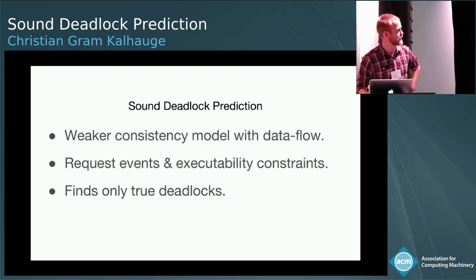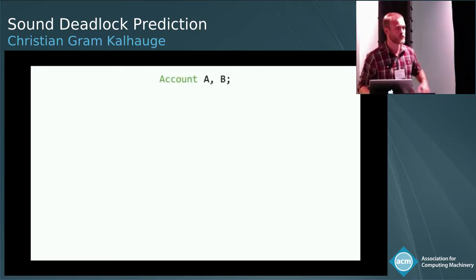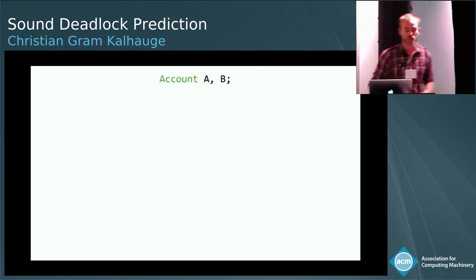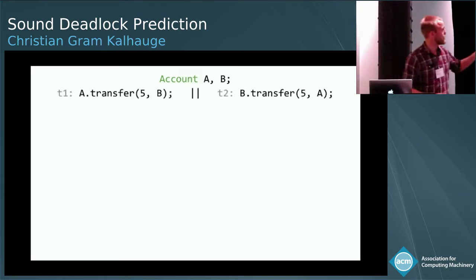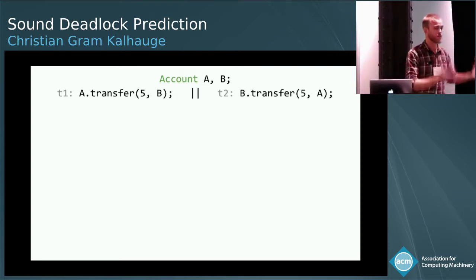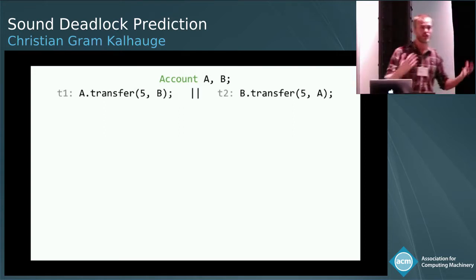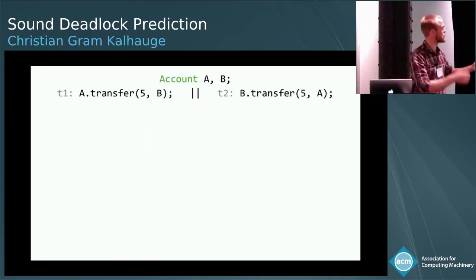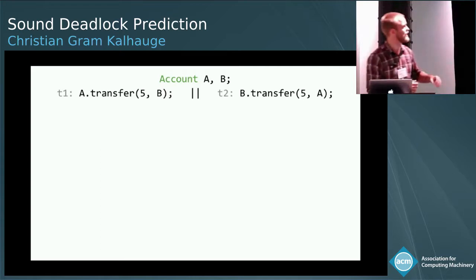Let's start with an example. Given that you have two accounts, A and B, and you run them in parallel: you transfer $5 from A to B, and B transfers $5 to A. You run them in parallel, and suddenly it deadlocks — it doesn't complete, and you're frustrated and want to be done with work for today.